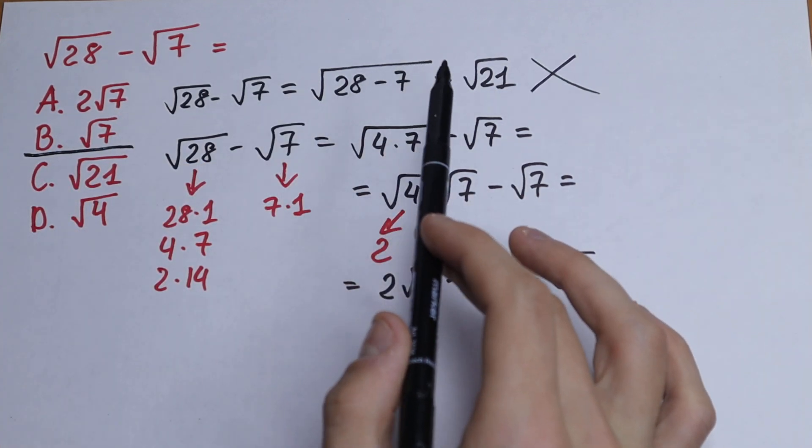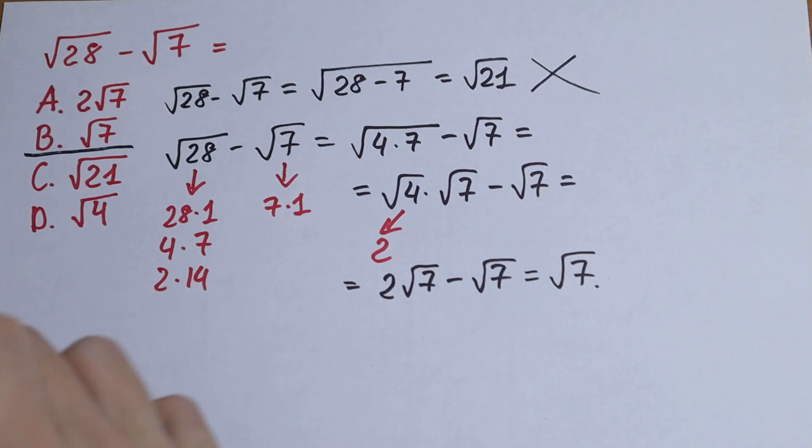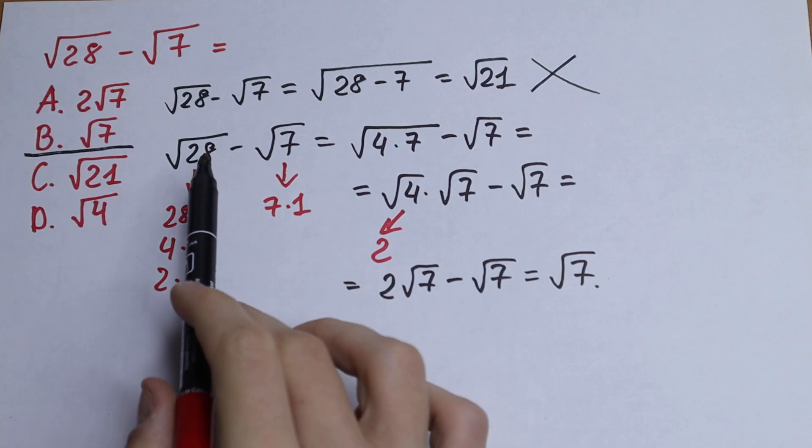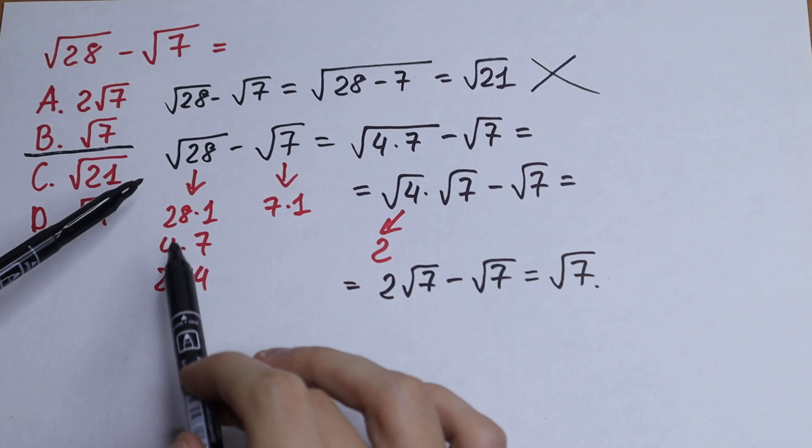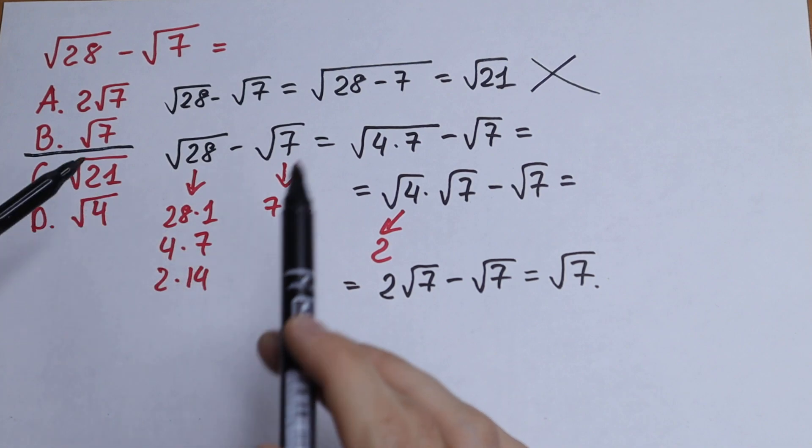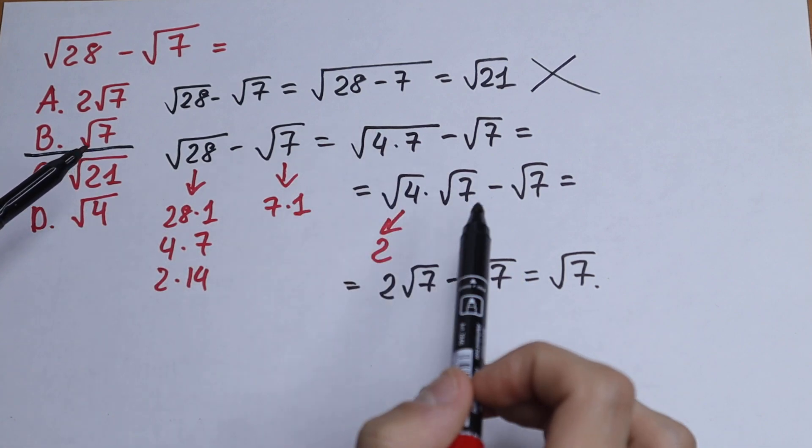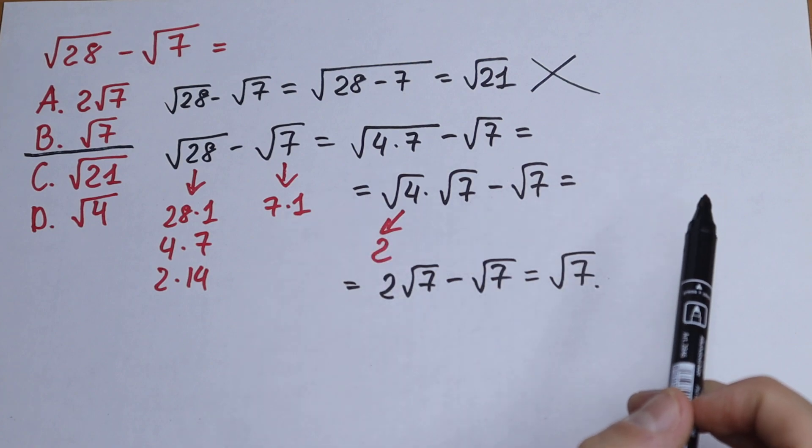This way is wrong. Forget this way how to solve this. This is the worst way I've ever seen. We need to express 28 as 4 times 7, and we take square root easily right here and just simplify this a little bit.